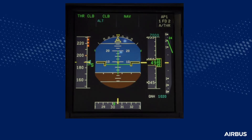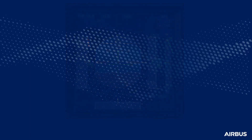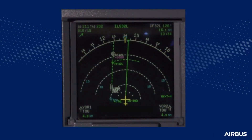The VFE and the VFE Next are displayed on the PFD according to the flap lever position. Before starting the ECAM actions, the flight crew will agree with ATC to stop the departure and establish a safe trajectory.